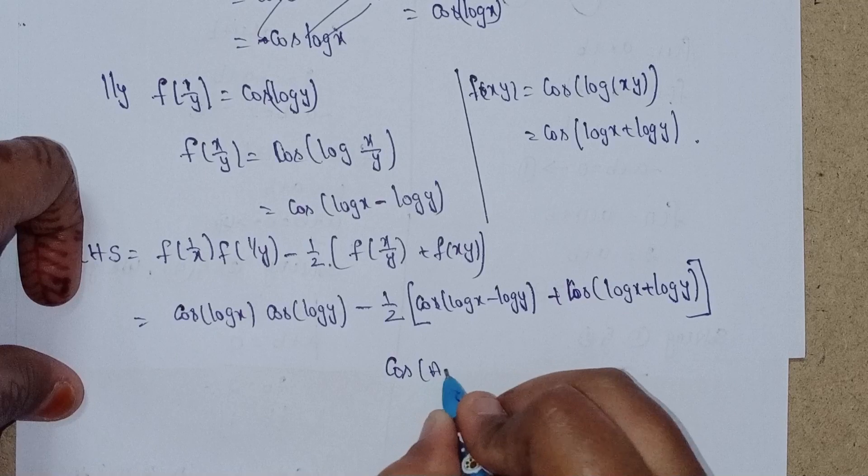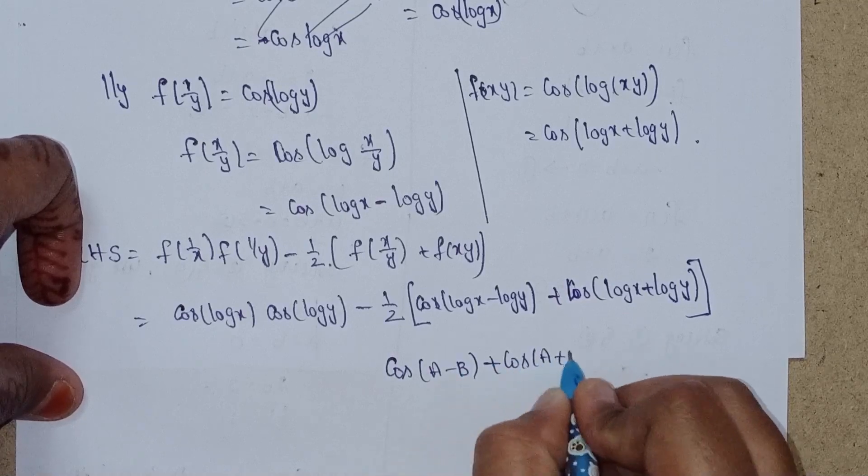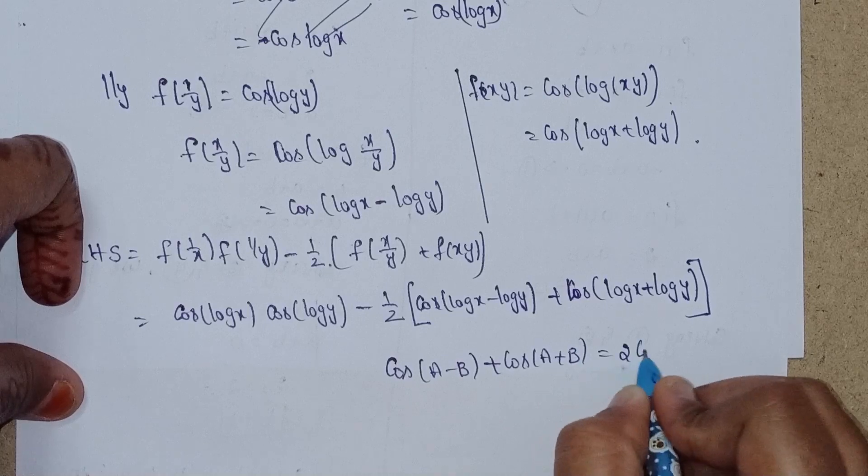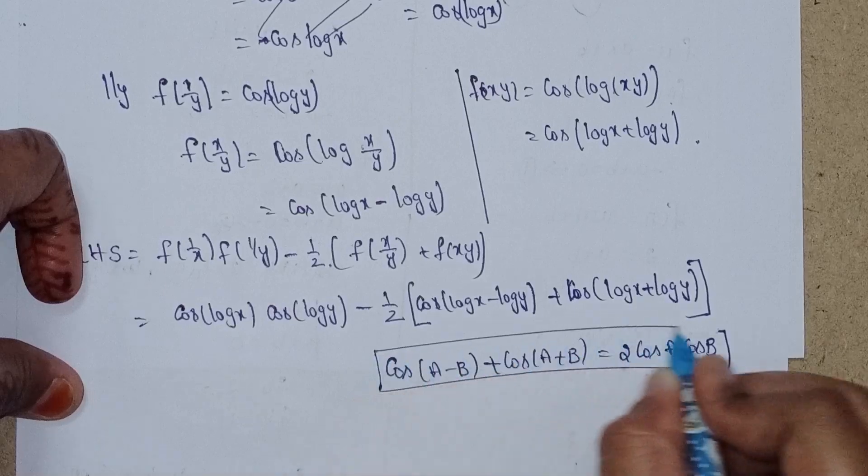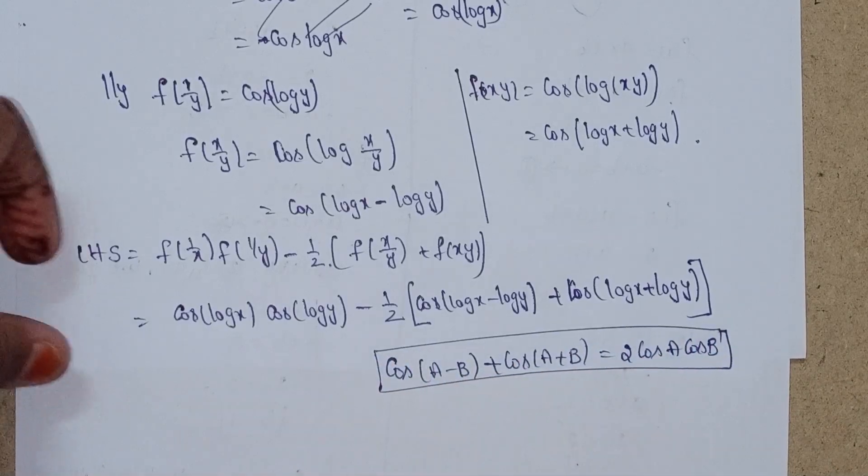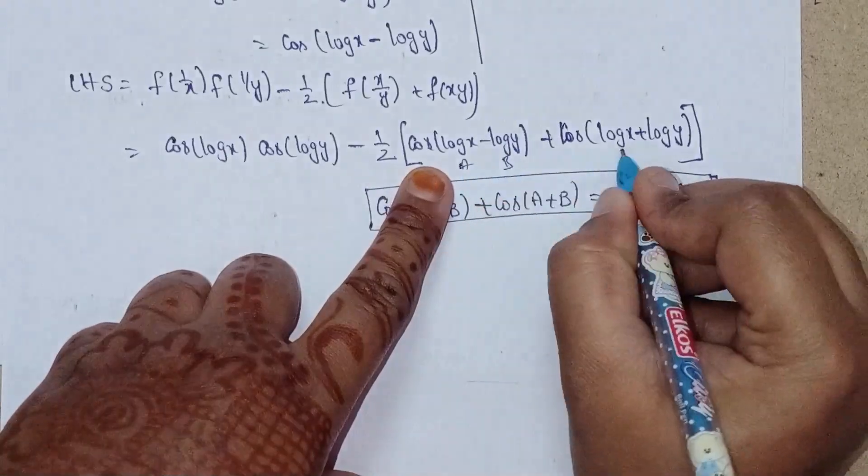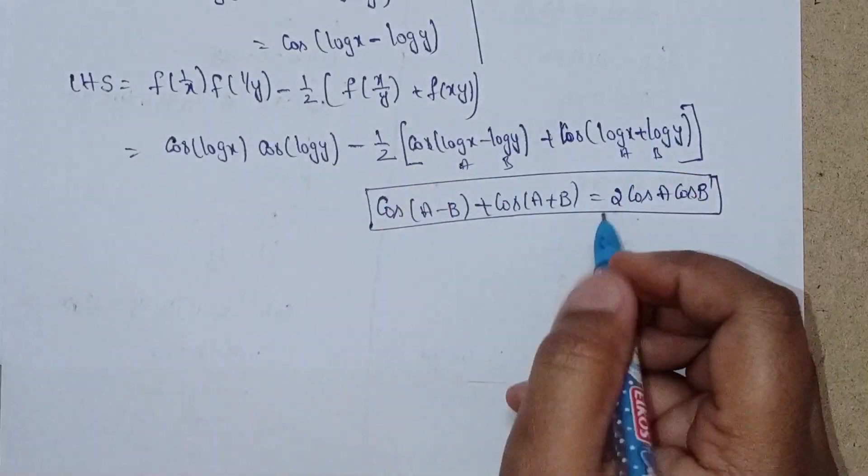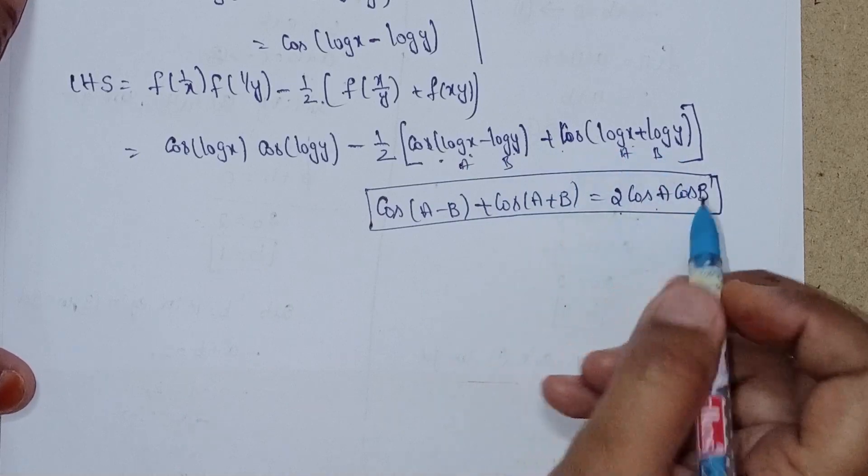We'll use the trigonometric formula: cos(a - b) + cos(a + b) = 2cos(a)cos(b). Here a = log x and b = log y.